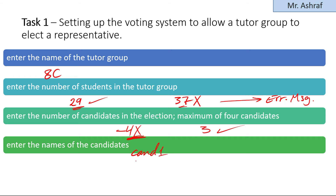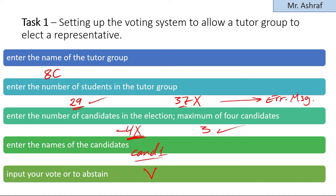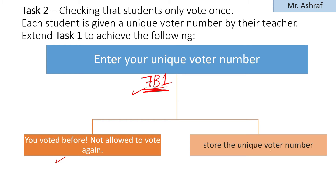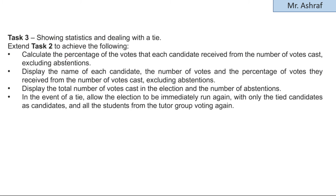Another question asks to enter the number of candidates in the election — a maximum of four candidates. We should also validate this input. For example, if the user inputs negative four, that value should be invalid. If the user inputs three candidates, that value is accepted and the program proceeds.